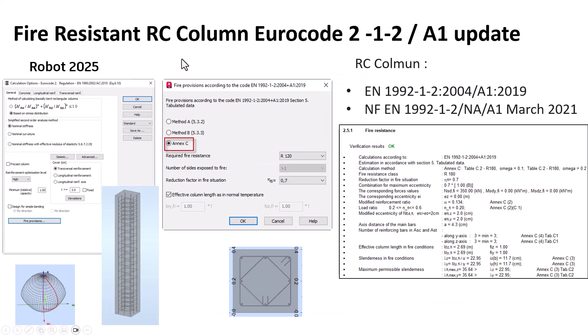So now in robot reinforced concrete column, we have the annexes of Eurocode 2, part 1-2, and you have the detail of this analysis in the calculation notes.